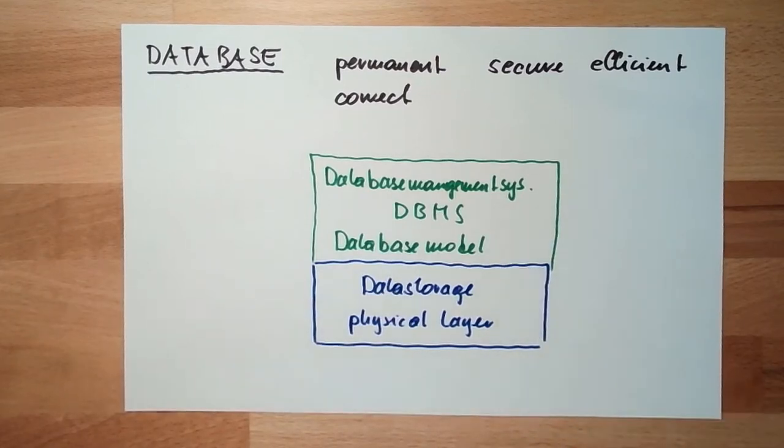I said already last time, a database model is basically the basic organization structure of a database, of the data in the database. I will now describe some of these database models, and we will get to the most important one.